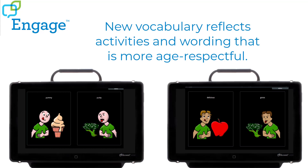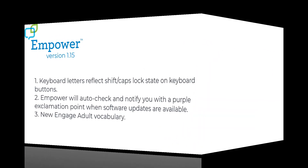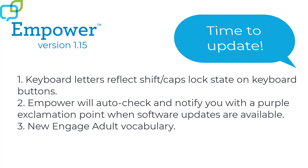We've added new vocabulary reflective of activities and wording that is more age-respectful for the older emergent communicator. For example, when talking about food, original Engage has wording for 'yummy' and 'yucky'. In the new option, we've changed those words to 'delicious' and 'gross'. From the vocabulary settings in Empower, you will now see the Engage adult vocabulary as an option. So many exciting updates in Empower version 1.15 — make sure to update your software!